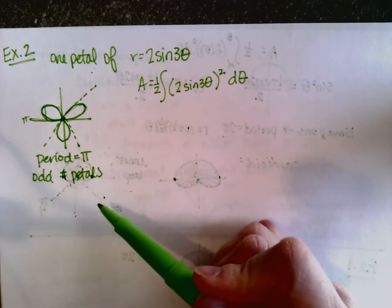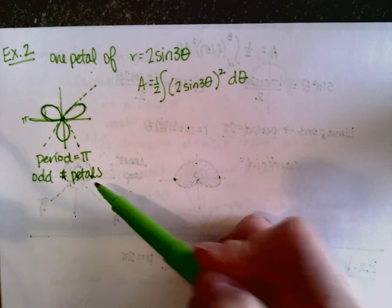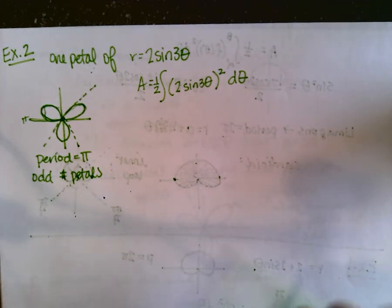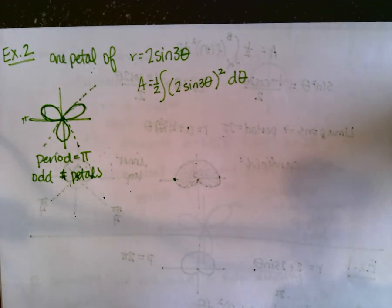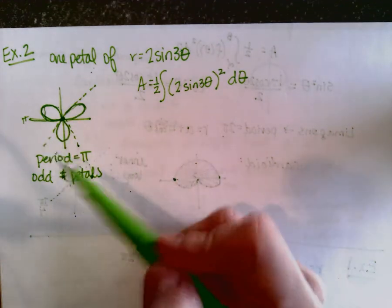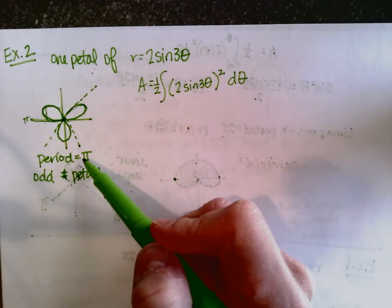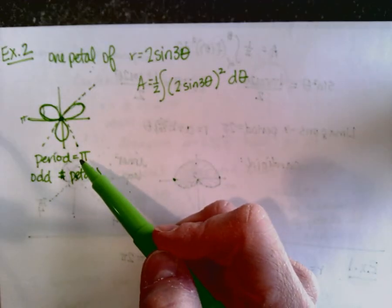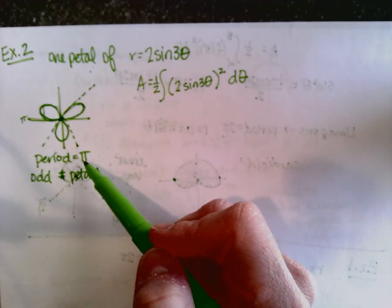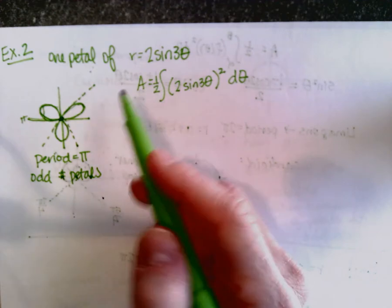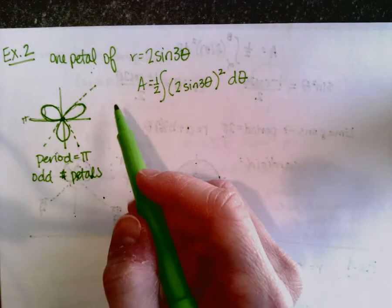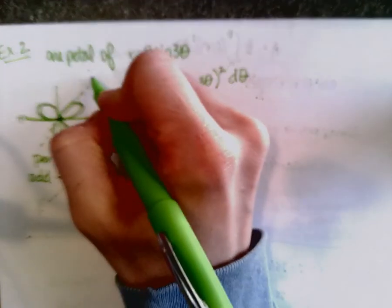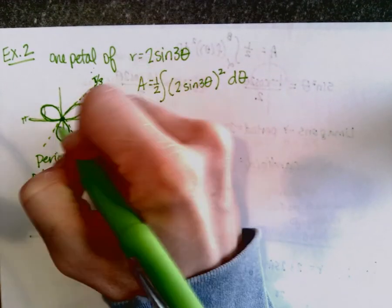There are a few ways to find the bounds. One way: if you know the period is pi and how many petals there are, you can just divide the period by the number of petals to get pi over three. So we're wanting to find the area between zero and pi over three, which gives us the area of one petal.